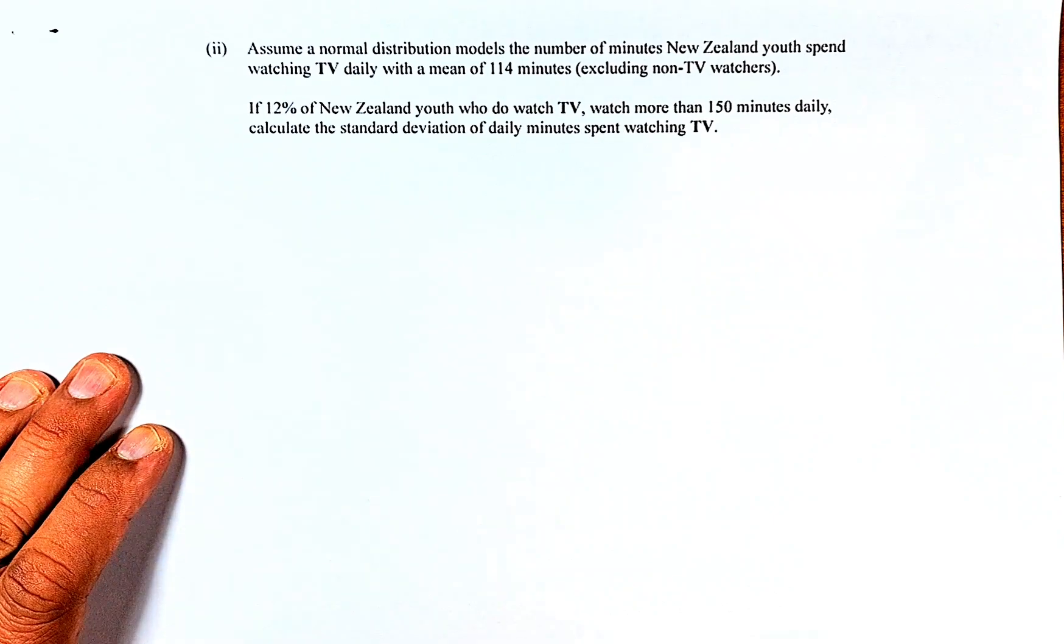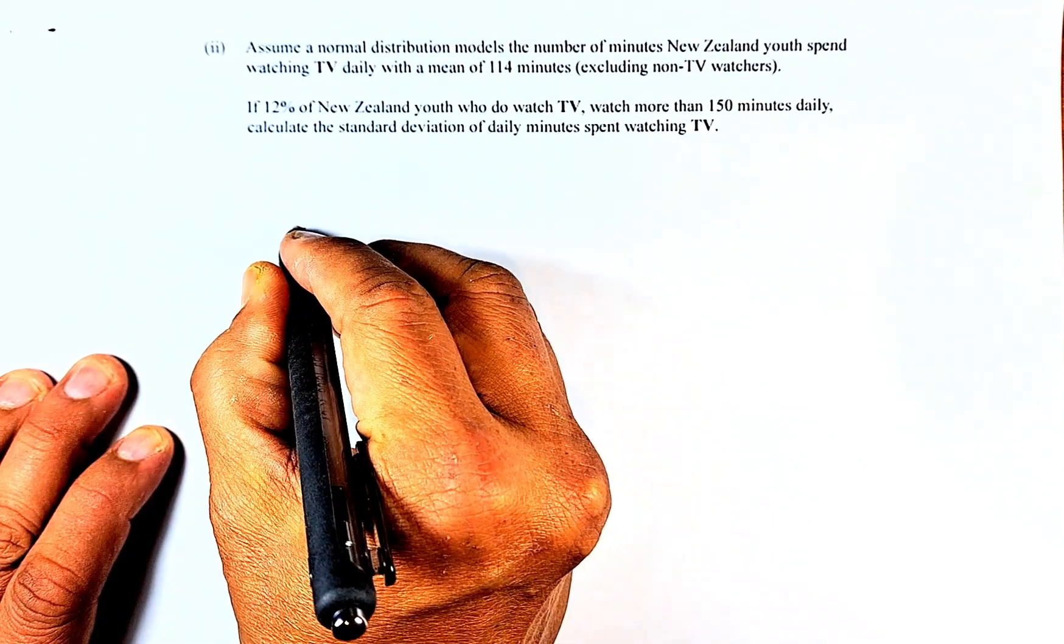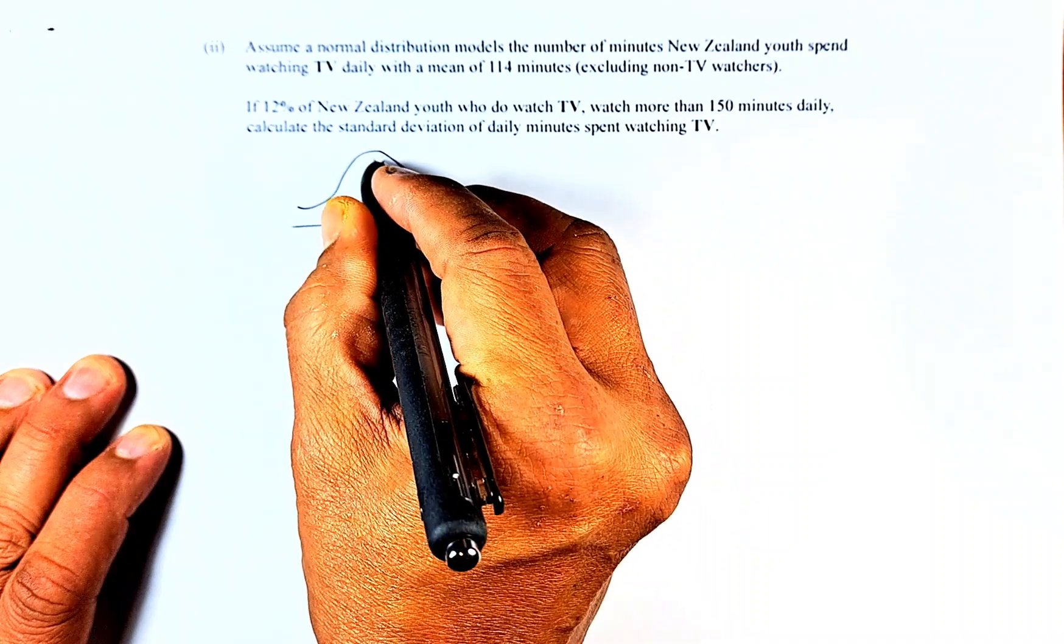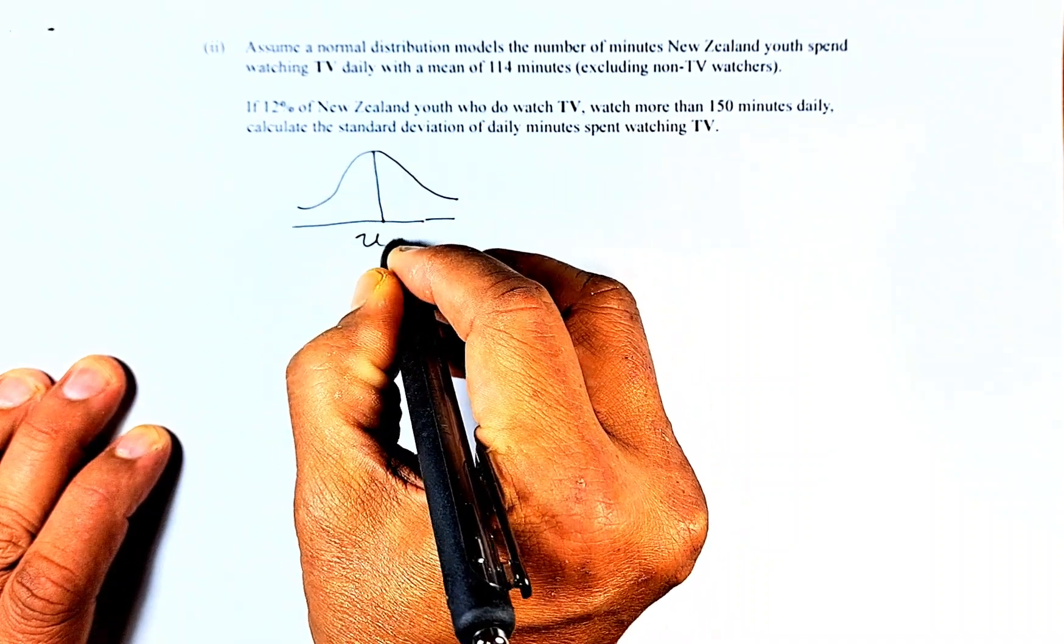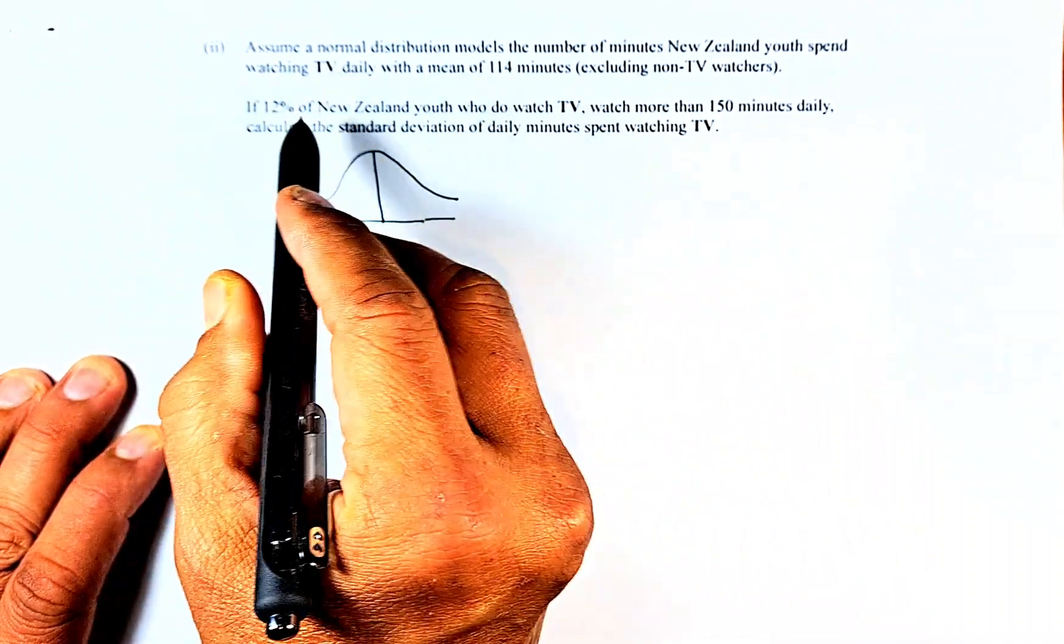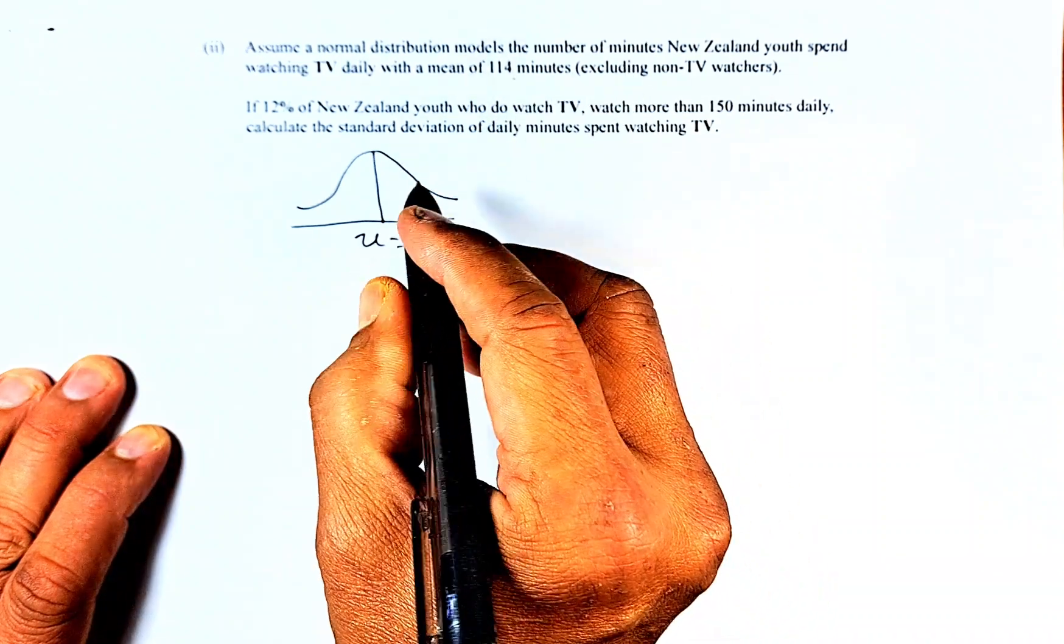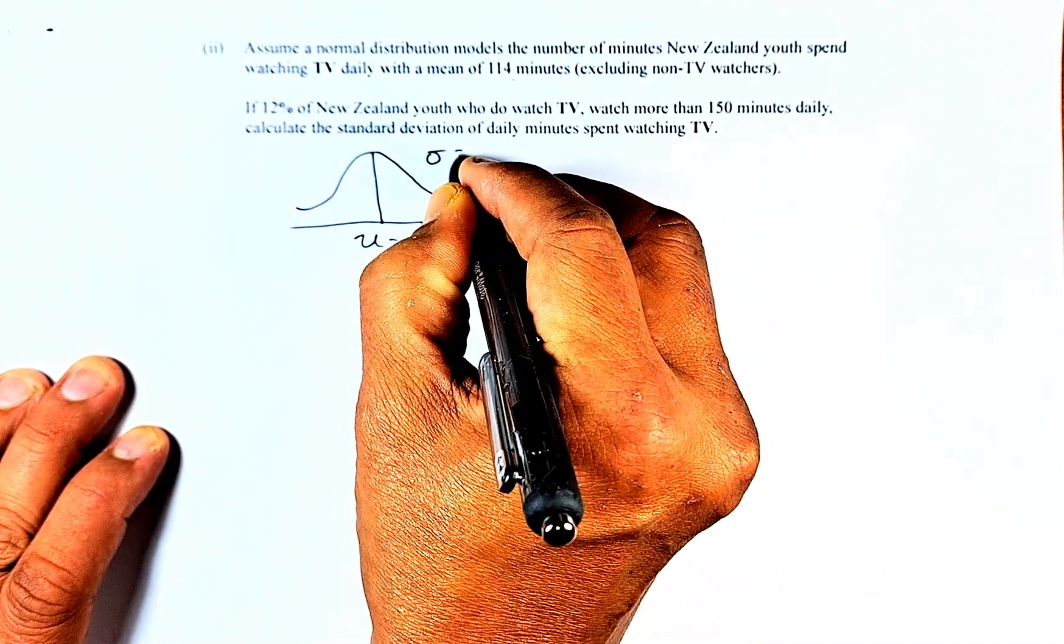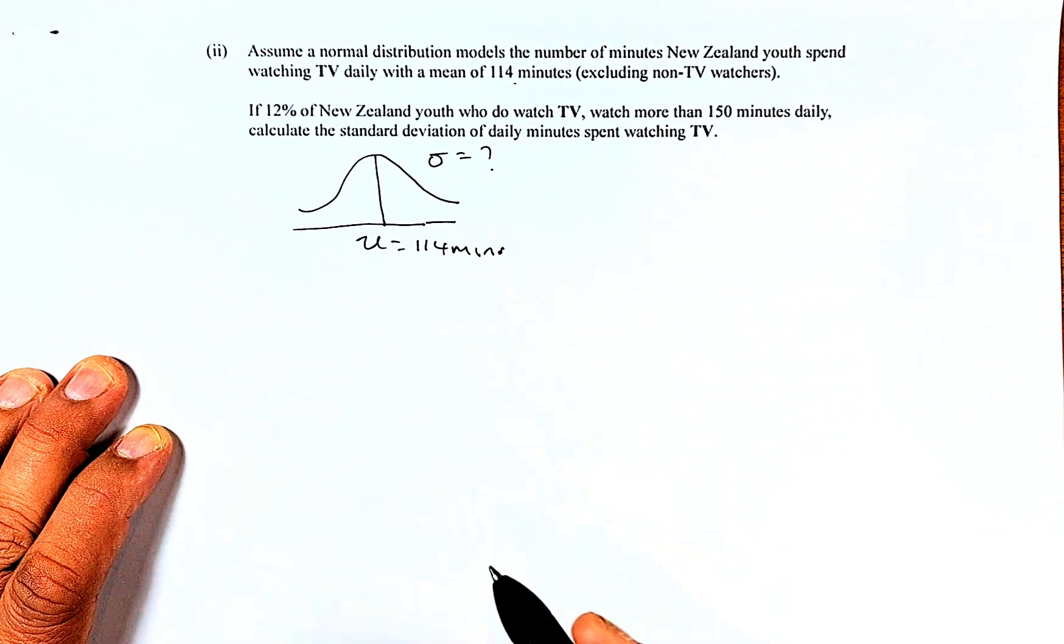Let's see what we do. So what we're going to do, we're first going to draw the normal distribution graph to understand what we're doing. So the normal distribution has a mean in the middle that is going to be 114 minutes. The standard deviation is something we do not know, so we have to standardize it.